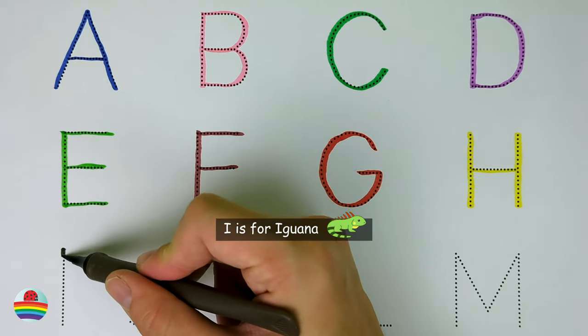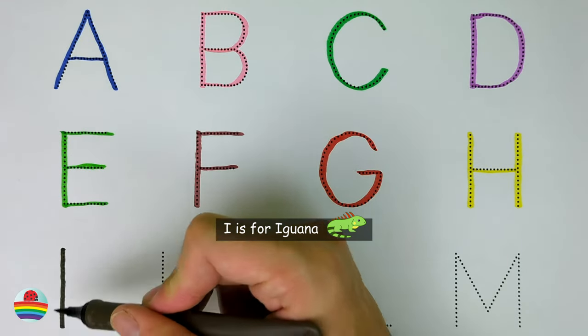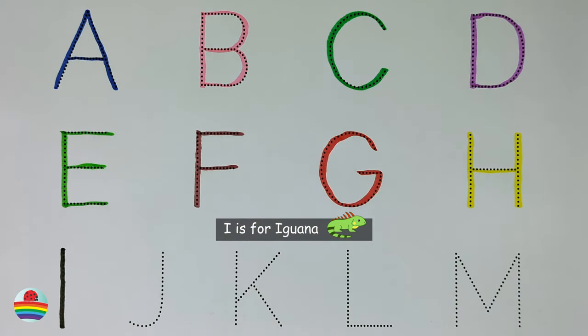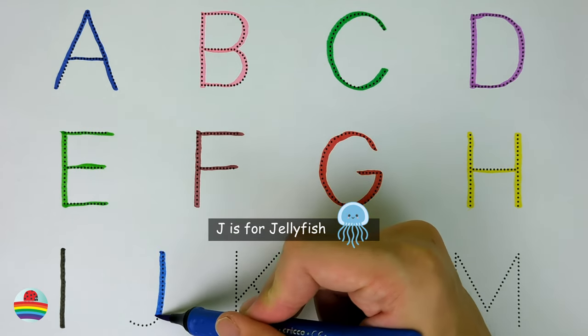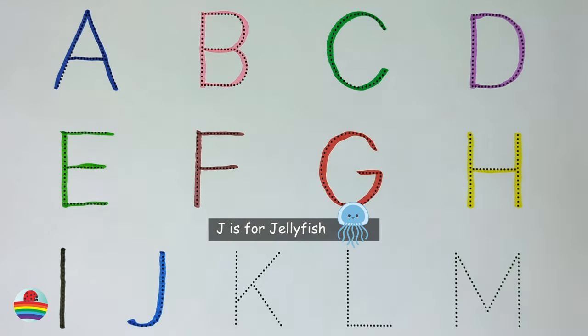I. I is for iguana. I. J. J is for jellyfish. J.